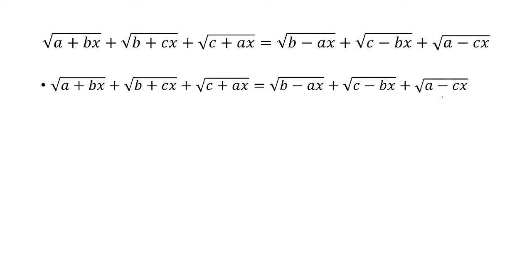So because they have different coefficients and they're opposites, really the only solution is when x is zero. Because when x is zero you just have the square root of a plus square root of b plus square root of c for both sides of the equation.